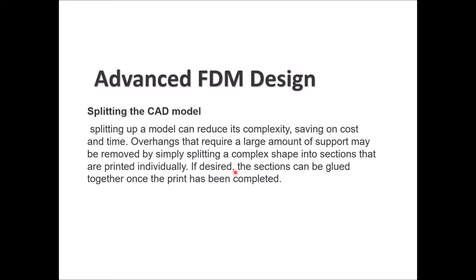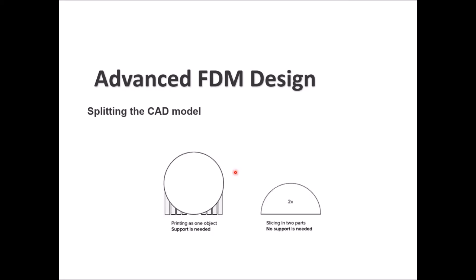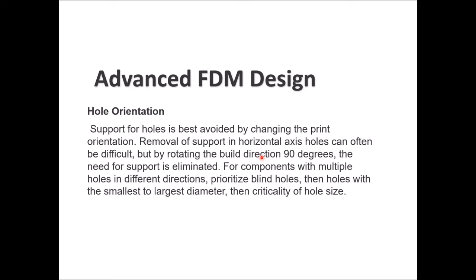Another technique you can use while printing with FDM is splitting the CAD model. This reduces complexity, saving cost and time. When you have overhangs that require too much support, you can remove that need by simply splitting the part into two or three sections printed individually, then gluing or assembling them together. For example, to print a sphere, you can cut it in half, print two parts, and combine them.